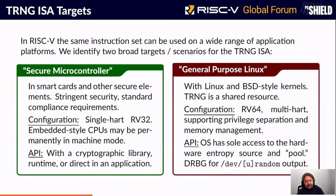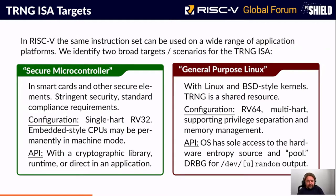We have two targets for this instruction. First, the secure microcontroller — an embedded single-chip solution, which could be a smart card, typically a 32-bit core with a custom cryptographic library, possibly permanently in machine mode. Our instruction is a machine mode instruction. Second, a general-purpose Linux target, typically 64-bit, where the interface would be in a kernel driver used to seed the entropy pool within the kernel.